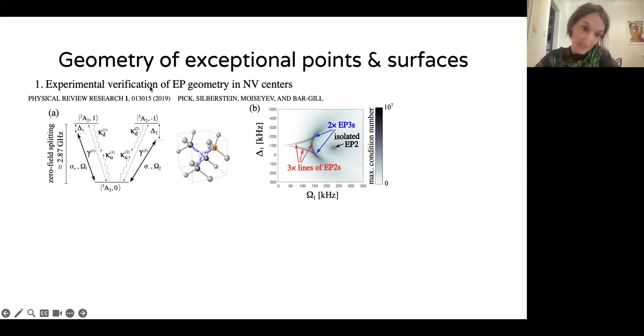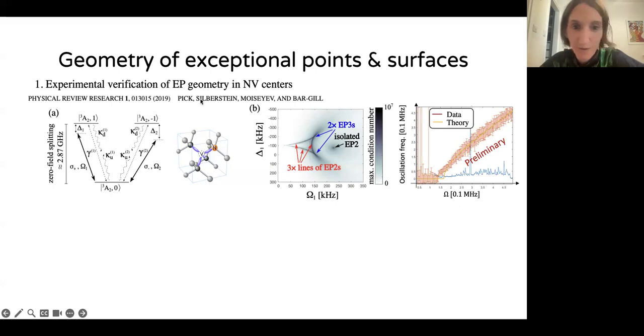We analyzed the geometry of exceptional lines for NV centers. We were able to prove some things. For example, if you only drive transitions between two of the levels, you can only get a bowtie shape of EP lines. You will never get exceptional isolated points. That's the only thing you can get. But if you want to induce isolated points, you have to drive transitions into a third level. And we were interested in these isolated points. So that's an example for how we basically found the parameters that give you isolated points. I'll show you soon why we wanted that. This work was done in 2018. But now we're working on experimental verification of this result.